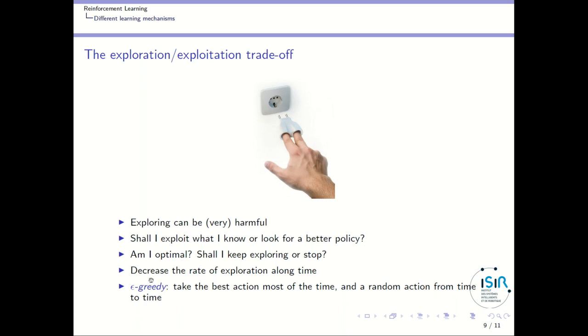One simple way to perform exploration that will be useful for several algorithms is called epsilon greedy. The idea is that you take the best action most of the time and with a very low probability, you take a random action from time to time. And many proofs of convergence of reinforcement learning algorithms are based on this mechanism because if you take random action from time to time, you will explore everything over an infinite horizon. And exploring everything is necessary to find the optimal behavior in a mathematical sense.